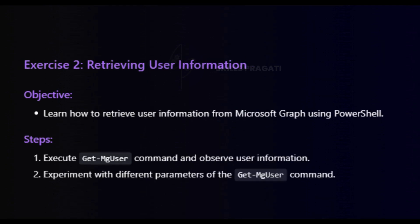Next, Exercise 2: Retrieving User Information. Let's shift our focus to retrieving valuable information. The objective is to learn how to retrieve user information from Microsoft Graph using PowerShell. We will execute the Get-MG User command, observe user details, and experiment with different parameters.